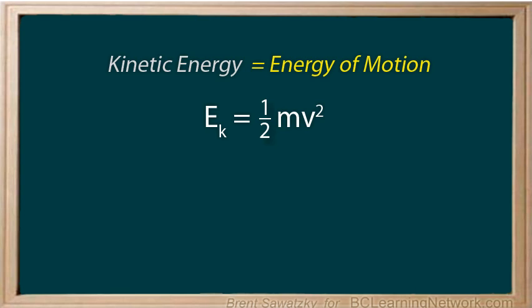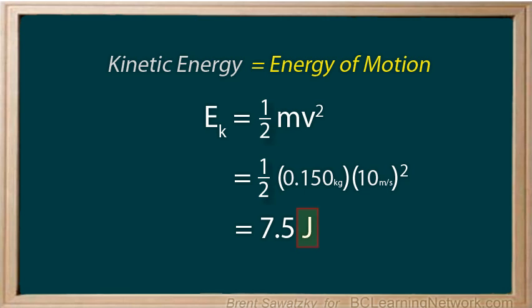First, we write down the equation being used. EK equals one-half mv squared. No plugging in numbers yet. Second, we write the equation again, but this time replace the variables m and v with brackets. Third, we put the appropriate numbers into those brackets, ensuring that the values are in standard units. And finally, we calculate the answer. Make sure you include your units with the answer. In this case, it's Joules.